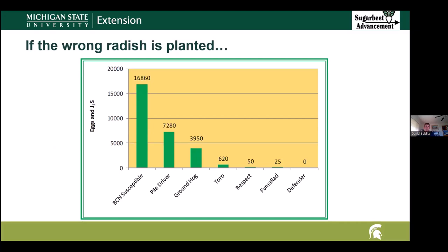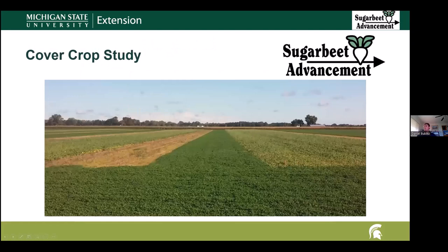Up on the screen, I've got a chart showing the increase in eggs and juveniles that can happen with various types of host crops. This is really trying to demonstrate the impact on your population if you plant the wrong type of radish. The first column is a susceptible sugar beet variety, and then the next two are tillage radishes that are susceptible and good hosts for the beet cyst nematode — you can see how much the population increases when using those incorrect varieties. I also want to mention that sugar beet advancement is currently working on a cover crop study comparing clover, radish, or no cover crop in the wheat field before sugar beets are planted, then looking at the impact on nematode populations and yield of the sugar beets the following year. We've got a couple of years of data and are still working on the project, trying to get a few more years of data.